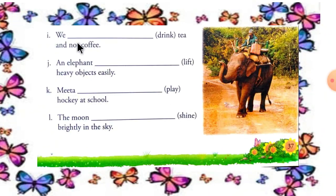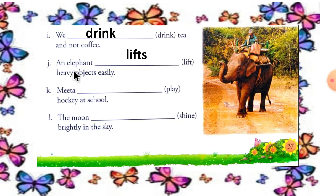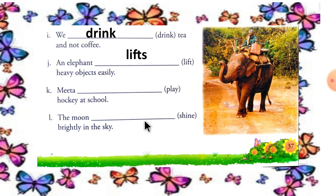We drink tea and not coffee. An elephant carries heavy objects easily. Mita plays hockey at school. The moon shines brightly in the sky.